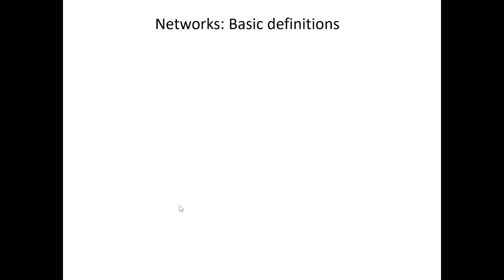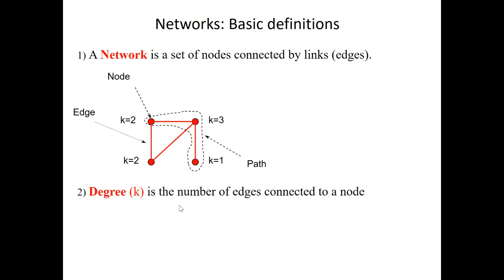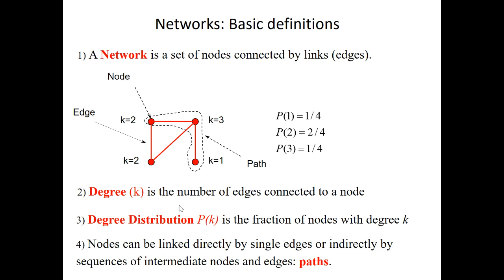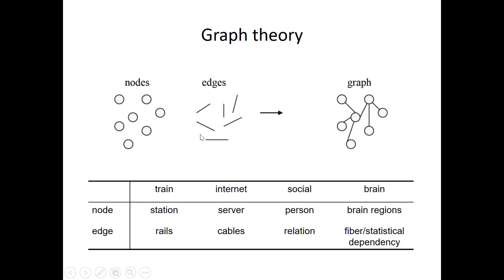Now let's address the basic definitions of networks. A network is a set of nodes connected by links called edges. The degree of a node is the number of edges connected to it. The degree distribution is the fraction of nodes with a certain degree. Here is an example of a very simple network with four nodes. Nodes can be linked directly by single edges or indirectly by sequences of intermediate nodes and edges — these are called paths.